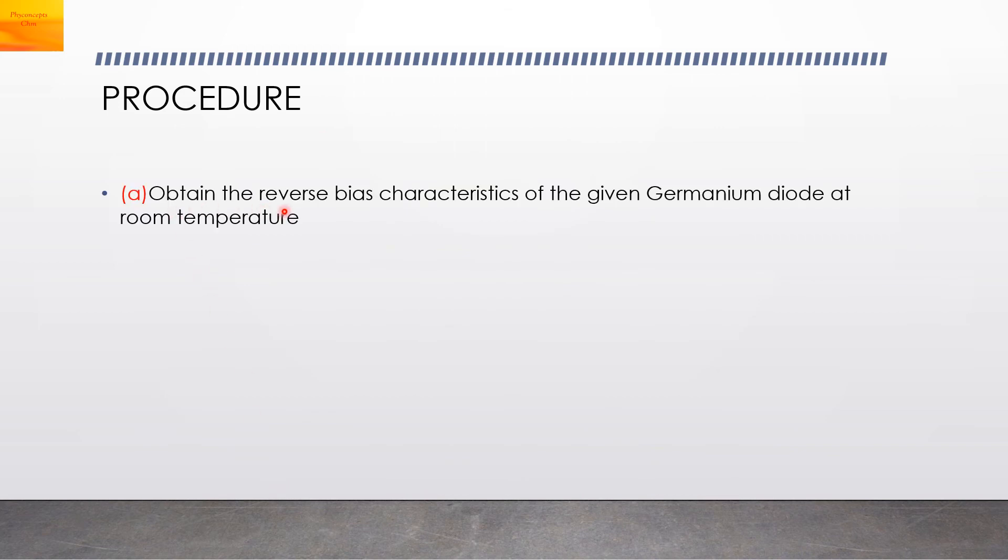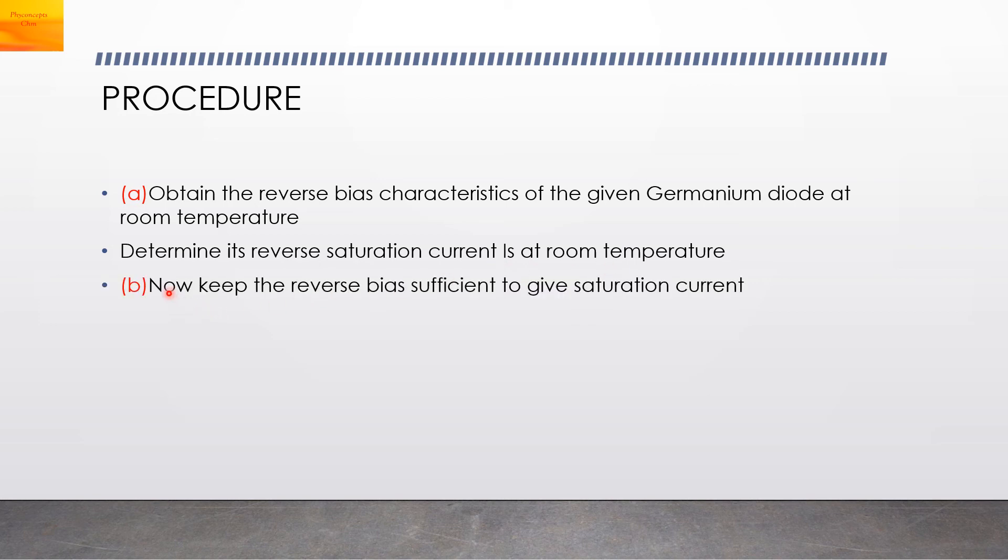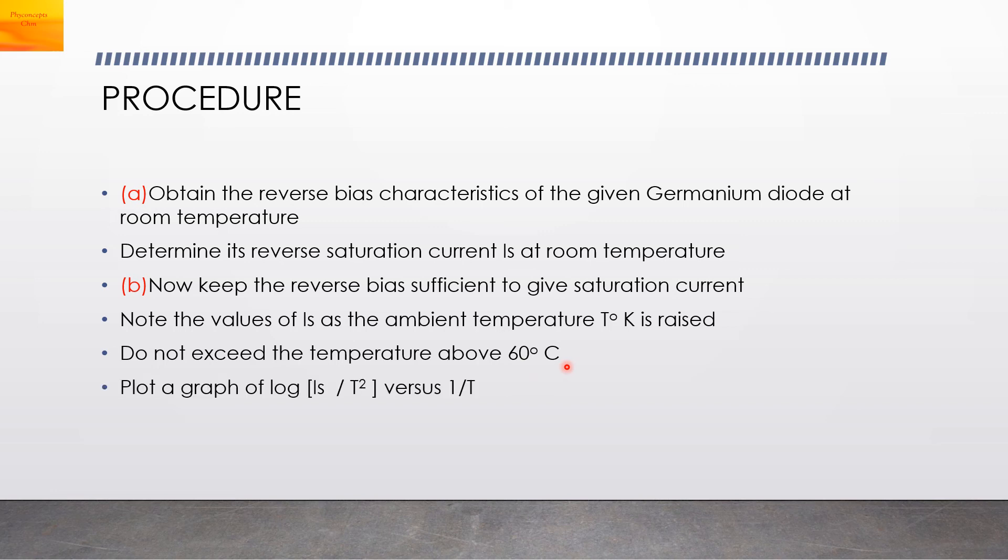Procedure: the first part is obtain the reverse bias characteristics of the given germanium diode at room temperature. We will determine its reverse saturation current, IS, at room temperature. In the second part, we will keep the reverse bias voltage sufficient to give a saturation current. Then we will note the values of the reverse saturation current, IS, as we increase the temperature, T. Note that do not exceed the temperature above 60 degrees Celsius, otherwise the diode will get damaged. Then we will plot a graph of log of IS upon T square versus 1 by T. We will find the slope and determine the energy band gap of the semiconductor.